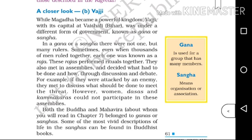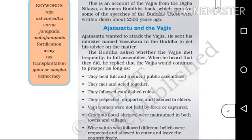Both the Buddha and Mahavira belonged to Gana Sanghas. Some of the most vivid descriptions of life in the Sanghas can be found in Buddhist books. This is an account of the Vajjis from the Digha Nikaya, a famous Buddhist book which contains some of the speeches of the Buddha, written down about 2,300 years ago.